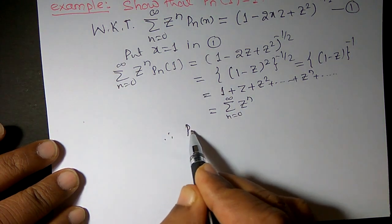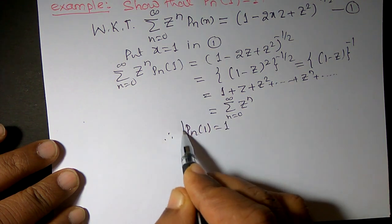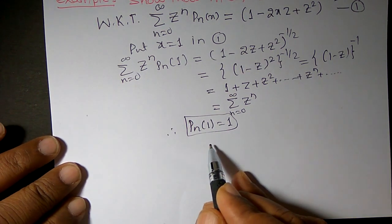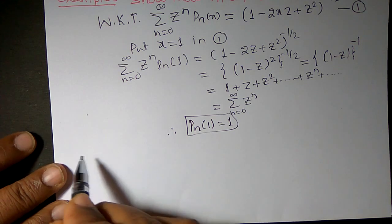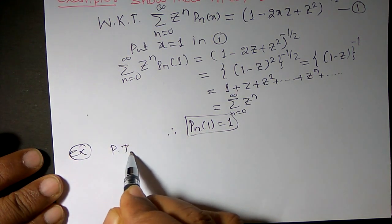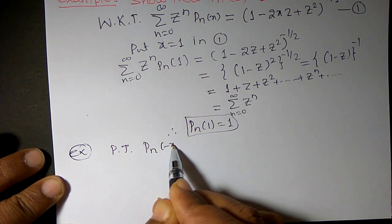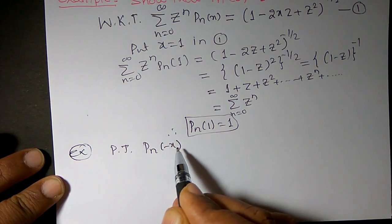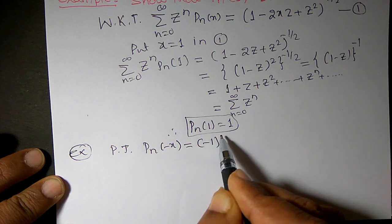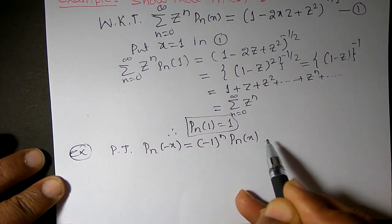The coefficient of z^n on the left hand side is P_n(1). Therefore, P_n(1) = 1. This is the required answer. Now, in exactly the similar way, we can prove that P_n(-x) = (-1)^n * P_n(x).